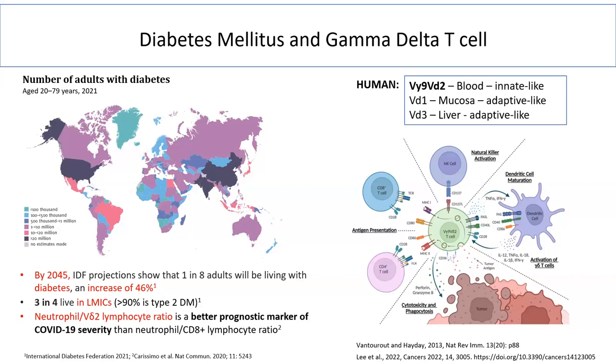In the blood, the majority subset of gamma delta T cells is Vγ9Vδ2. That is why I will focus more on exploring this subset of cells.